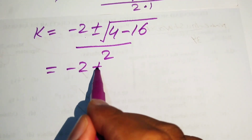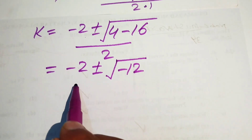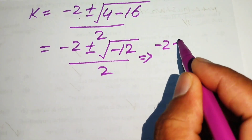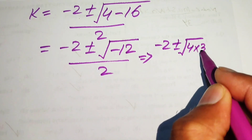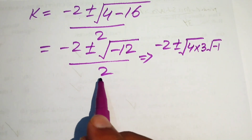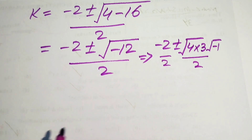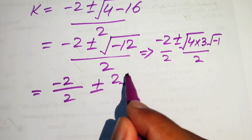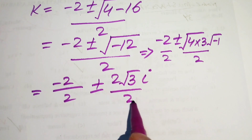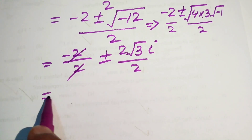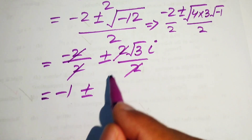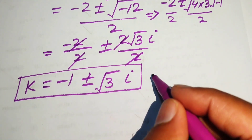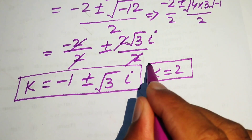Simplifying: k equals minus 2 plus or minus square root of minus 12, divided by 2. We write 12 as 4 times 3, and square root of minus 1 is iota. So square root of minus 12 equals 2 times square root of 3 times iota. Separating the fraction gives minus 2 over 2 plus or minus 2 root 3 iota over 2, which simplifies to k equals minus 1 plus or minus square root of 3 times iota. These are the two complex roots from equation 1, giving us 3 roots total.